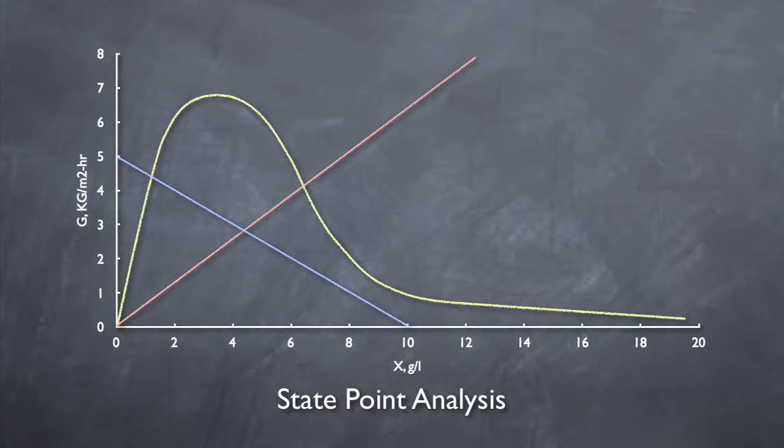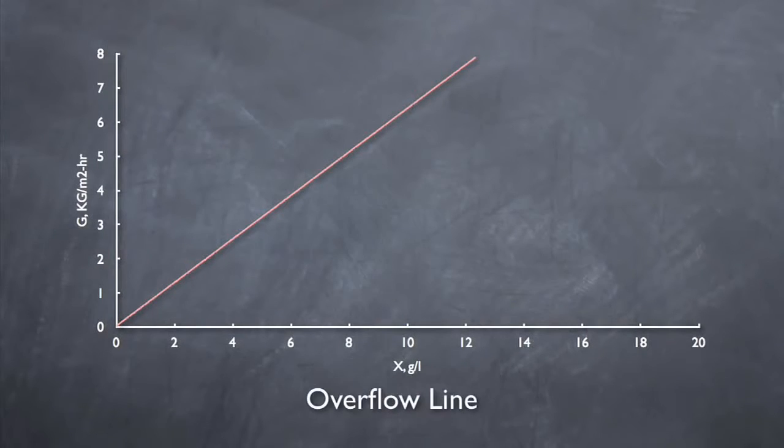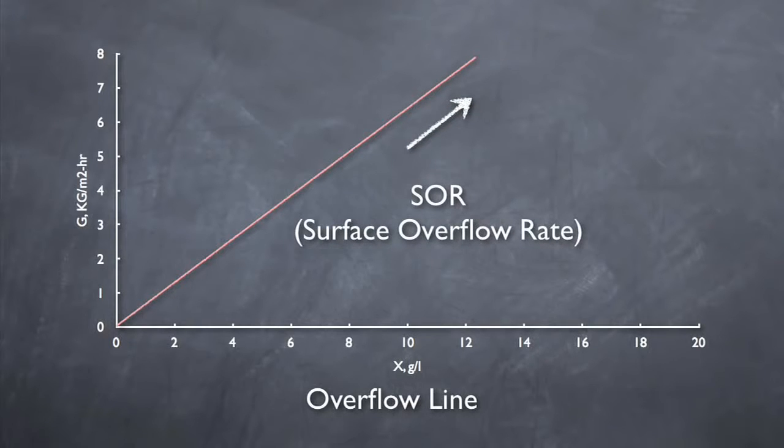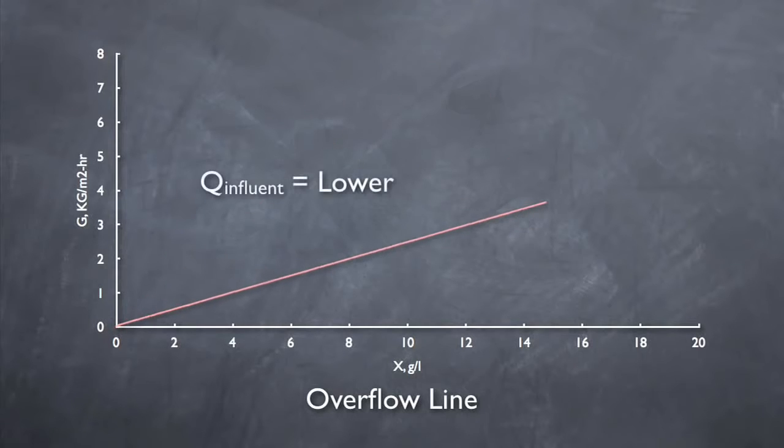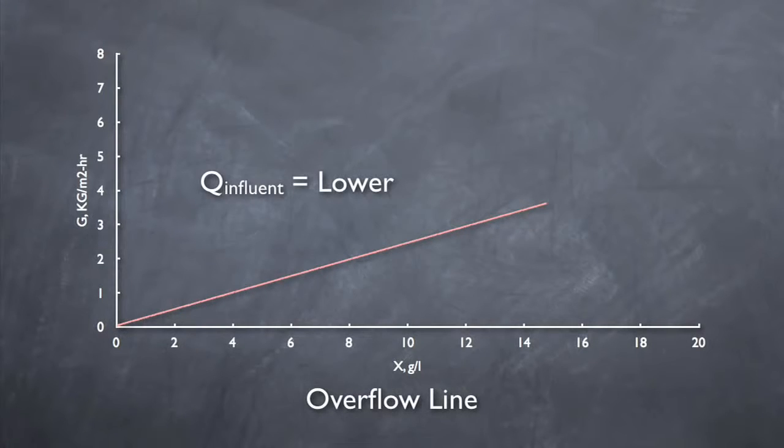The second component of the state point diagram is the overflow line. This line represents the flow through the clarifier. As the mixed liquor concentration increases, the flux increases also. The slope of this line represents the surface overflow rate, or SOR, which can be determined by dividing the influent flow by the clarifier surface area. It is important to remember that this line can be adjusted by changing the influent flow rate. A higher influent flow rate results in a steeper slope up. A lower influent flow rate results in a flatter slope.